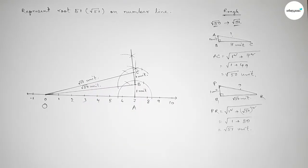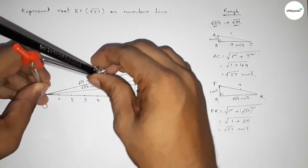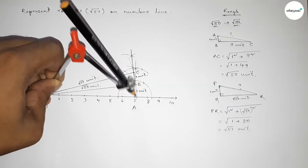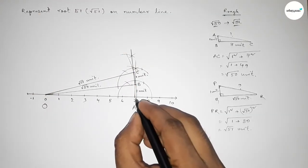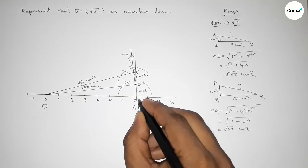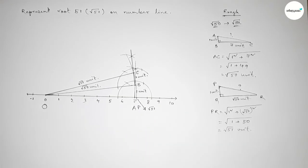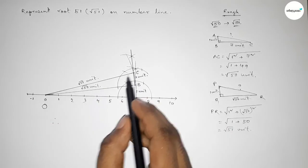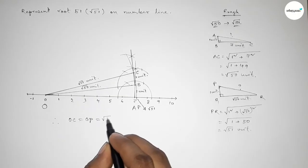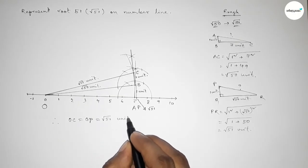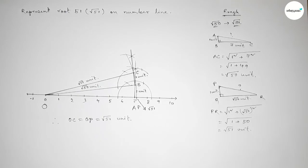Now taking the length OC equal to root 51 units using the compass and drawing an arc which meets the number line at a point P. So OP equals root 51 on the number line. Therefore OC equals OP equals root 51 units. That's all — thanks for watching. If this video is helpful, please share it with your friends.